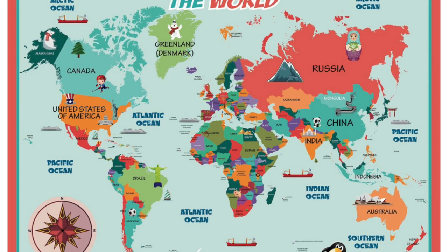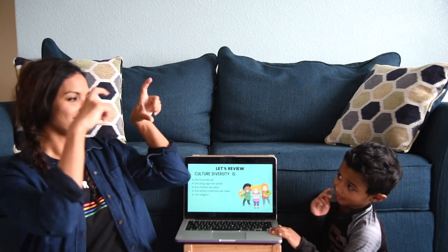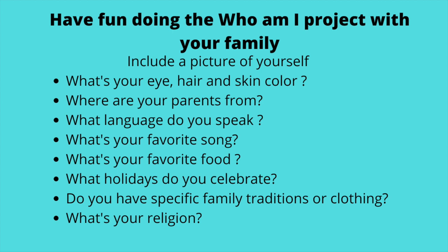Now we're going to do a super fun activity — the Who Am I project. Have fun doing this with your family. Include a picture of yourself and answer the following questions: What are your eye, hair, and skin color? Where are your parents from? What language do you speak? What's your favorite song? What's your favorite food? What holidays do you celebrate? Do you have specific family traditions or clothing? What's your religion?